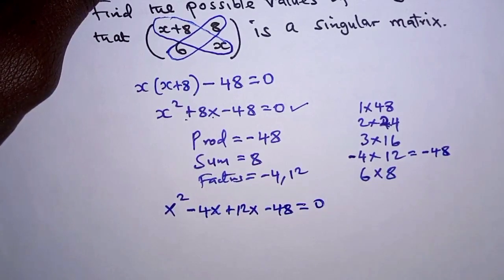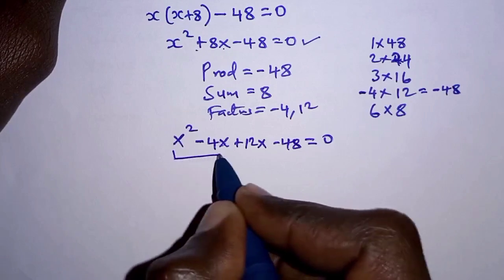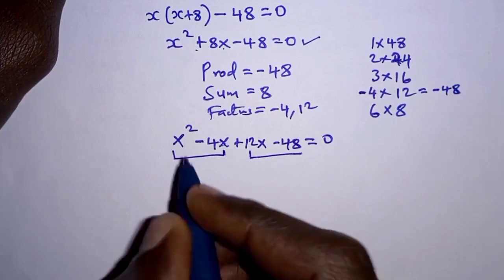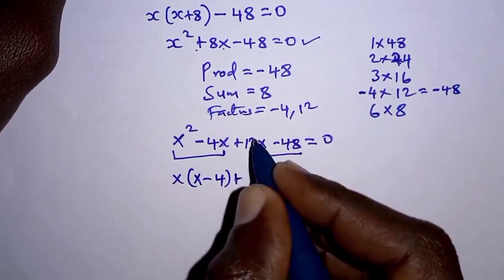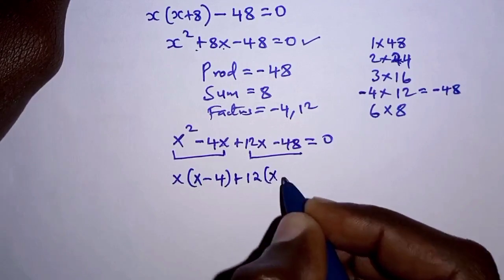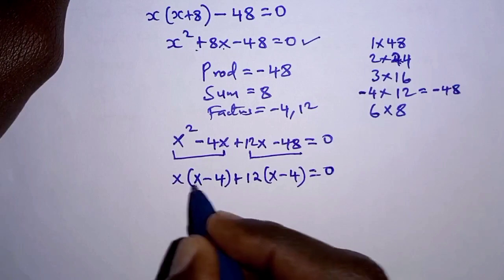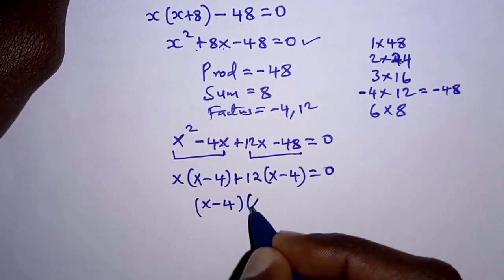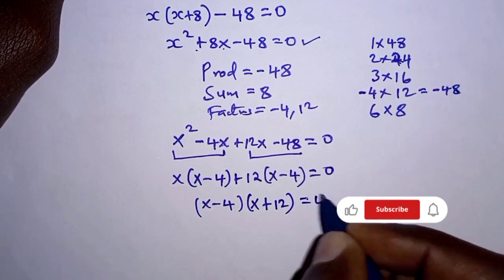We factorize by grouping. In the first part, the common factor is X: X(X-4). In the second part, the common factor is 12: 12(X-4). Since (X-4) is common, we factor it out: (X-4)(X+12) = 0.